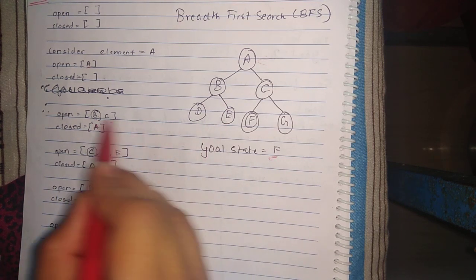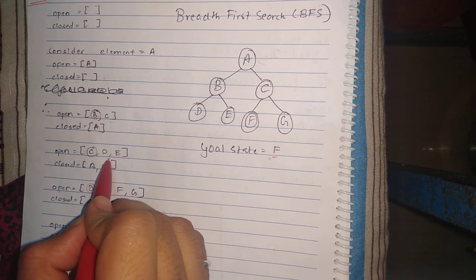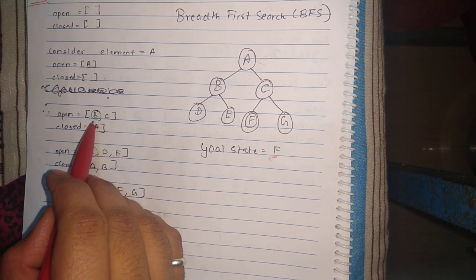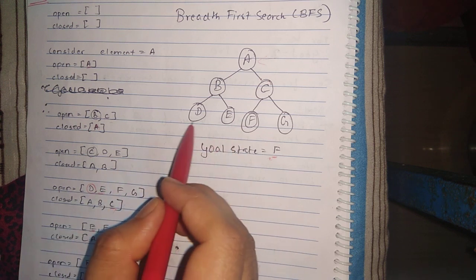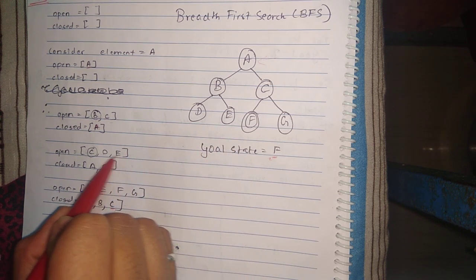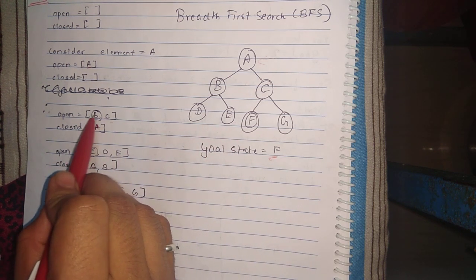Since B is not the goal state, we'll take the children of B which is D and E and insert those children from the back since C was already there. We'll place B into the closed array.